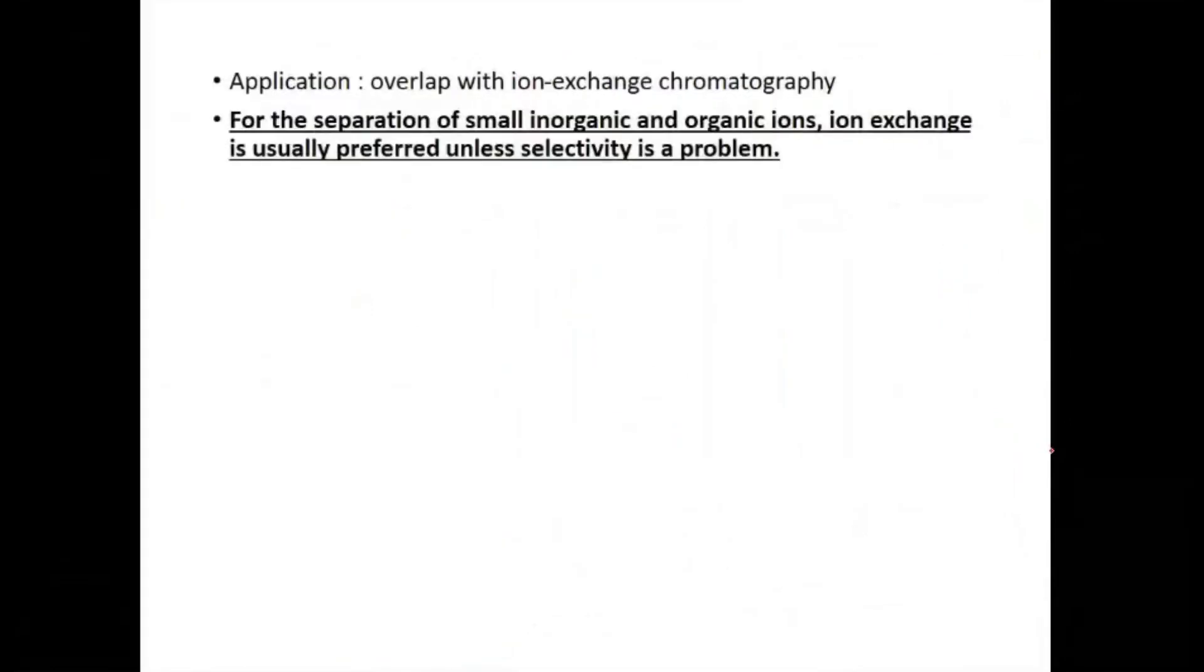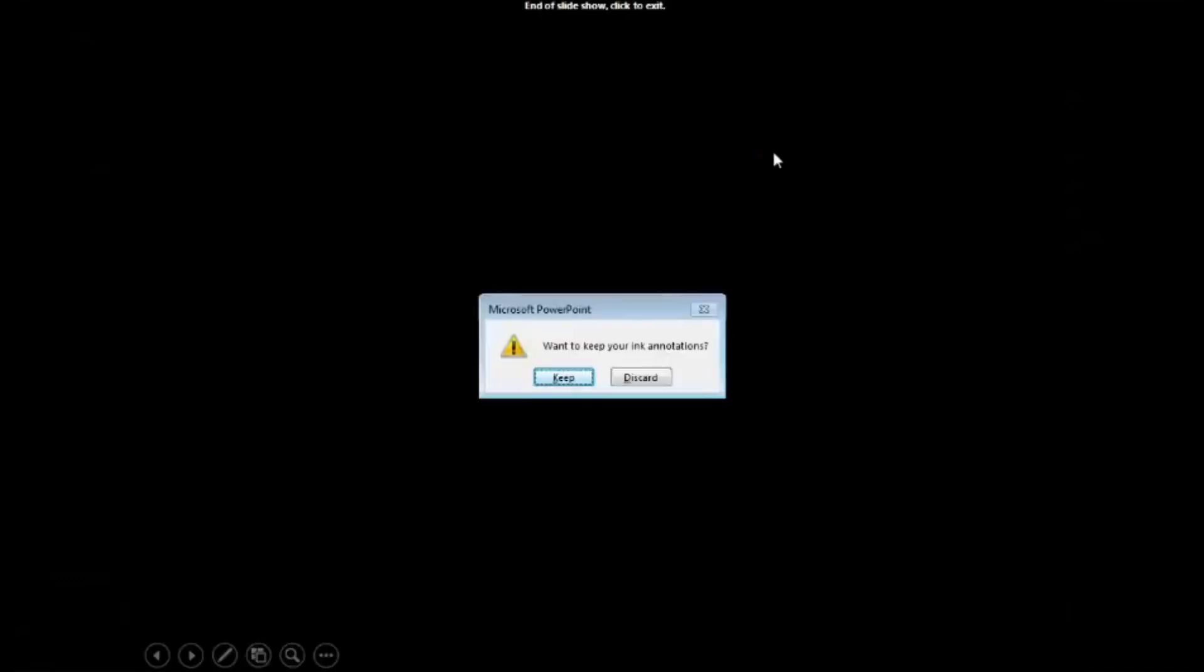You can share this slide. For application, all the applications which are present in ion-exchange chromatography are applicable here also. For the separation of small inorganic or organic ions, ion exchange is generally preferred unless selectivity is the problem. So ion-pair is generally not preferred if it is known that it is an ionic compound. You will use ion exchange; if selectivity is a problem, then only you will go for ion-pair. So that is it, we are done with this chapter also. Shrishmita is asking - non-ionic will interact with stationary phase and then elute? Yes, you are right.